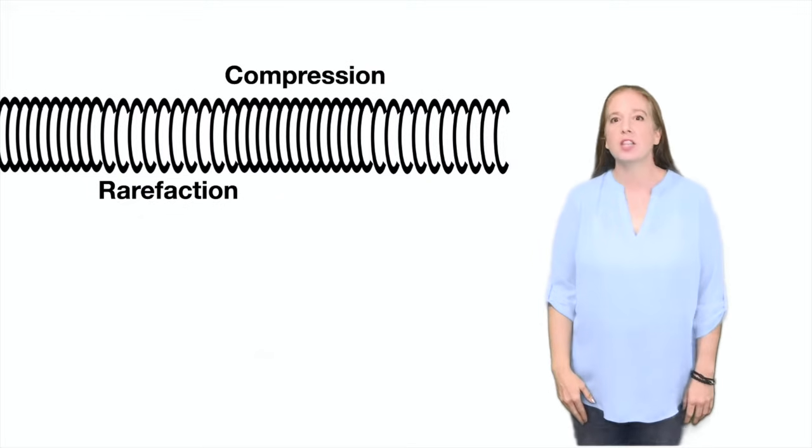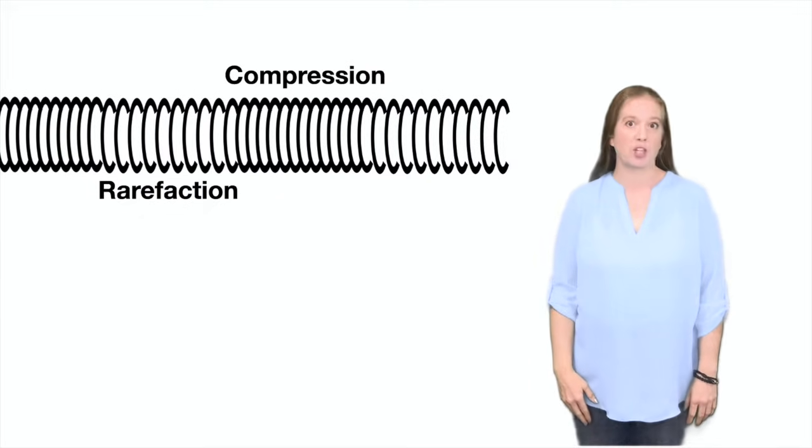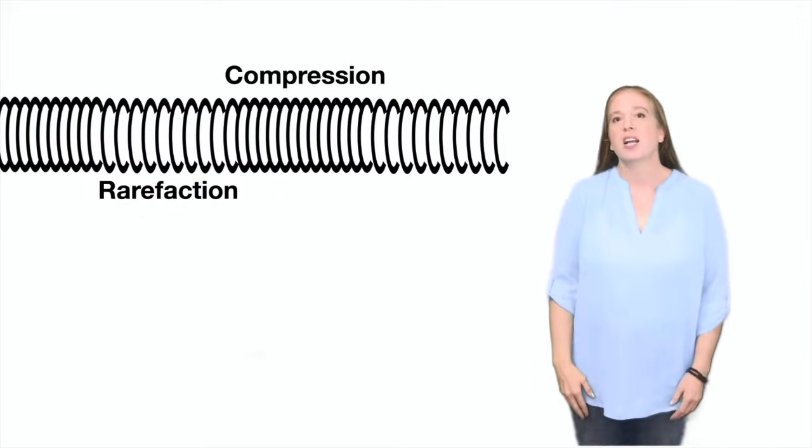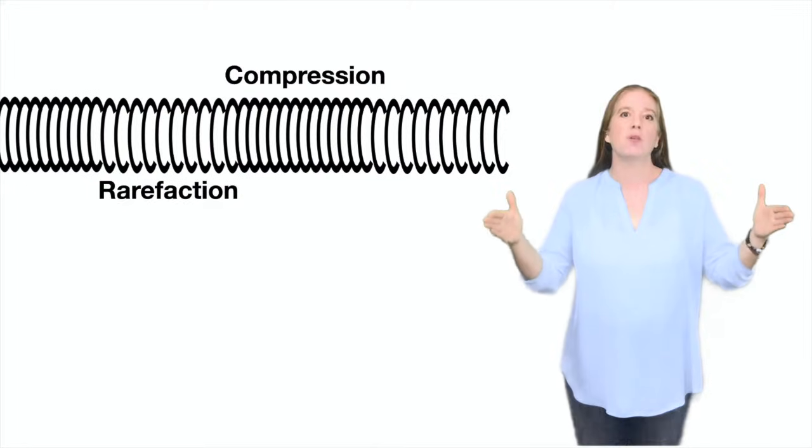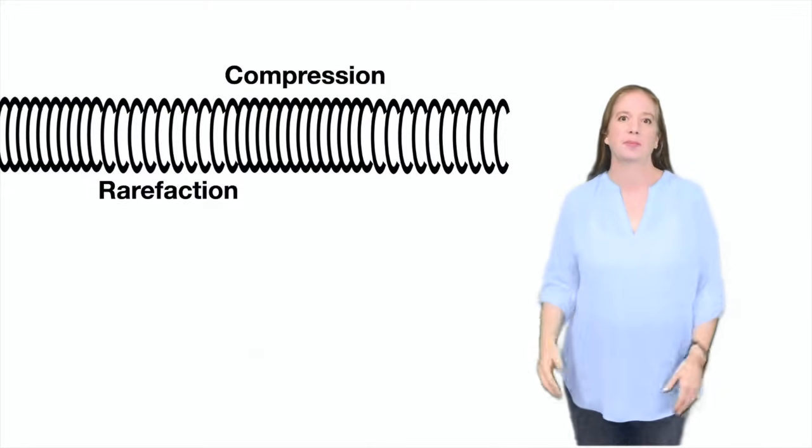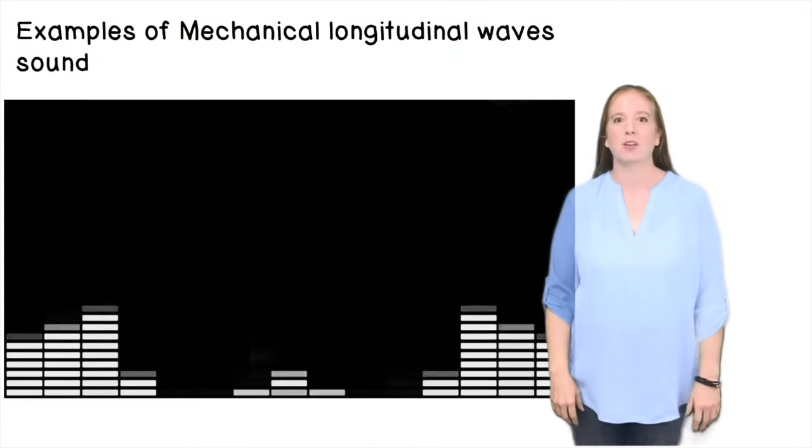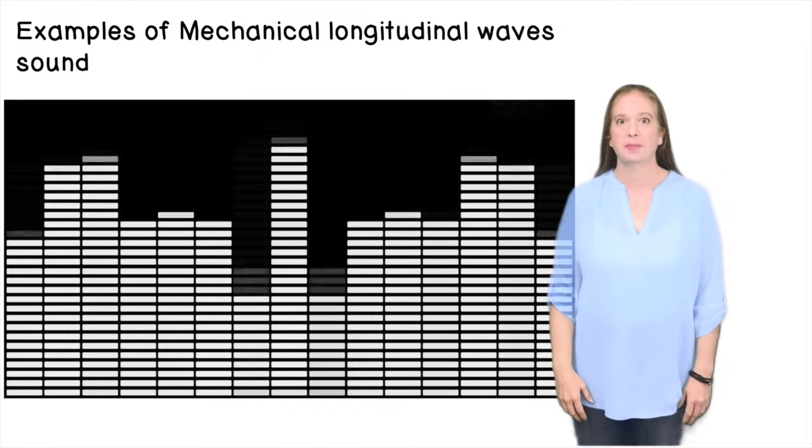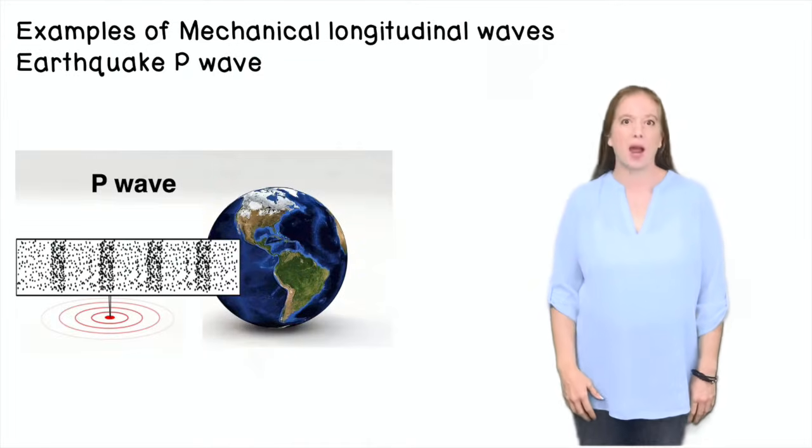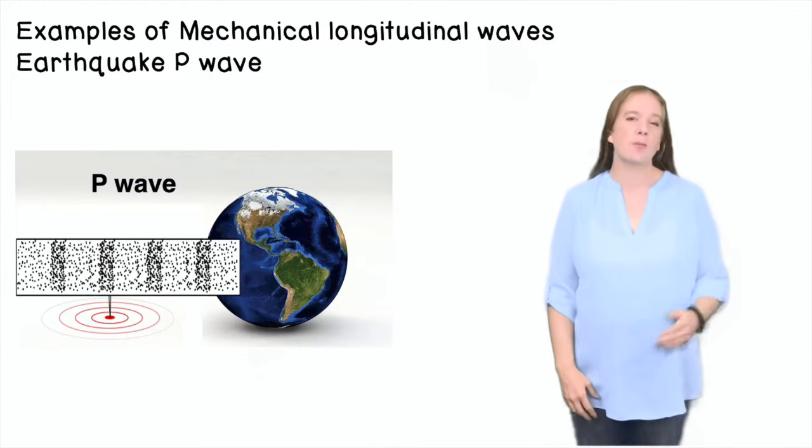The parts of a longitudinal wave include compression and refraction. Compression is the distance where the wave is shorter and compressed. In refraction, the distance of the wave is more spread out. Examples of mechanical longitudinal waves are sound waves and earthquake primary waves, or P waves for short.